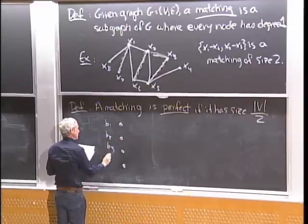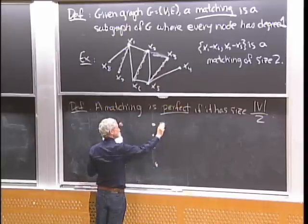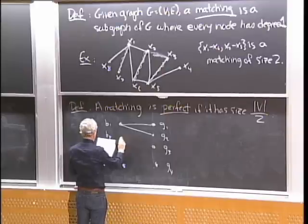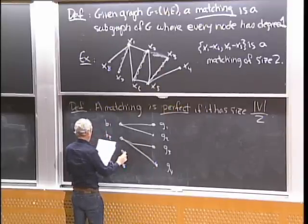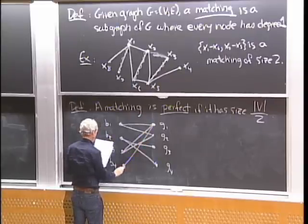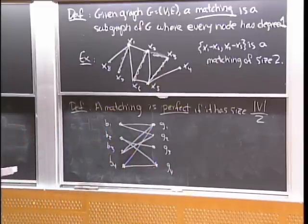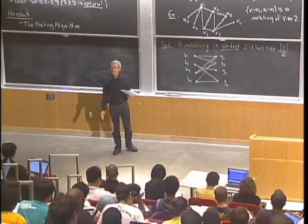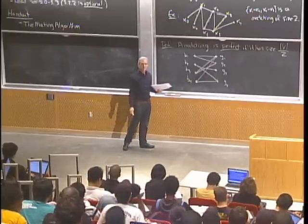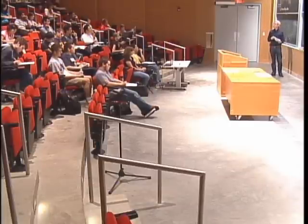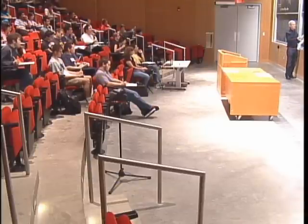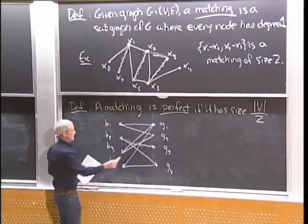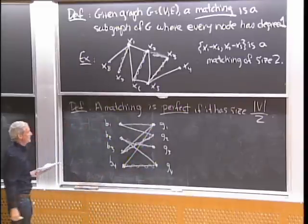For a new graph with boys b1, b2, b3, b4 and girls g1, g2, g3, g4, with compatibility edges: does that graph have a perfect matching? Can you pair up every boy with a girl so that everybody is compatible with their mate and has just one spouse? Yes — pairing b1-g1, b2-g3, b3-g2 gives a perfect matching in this graph.